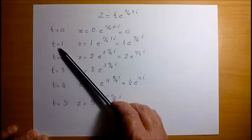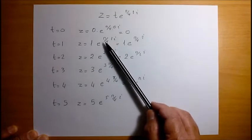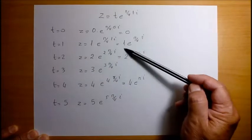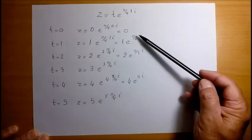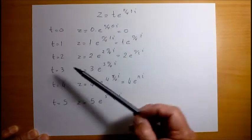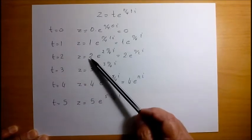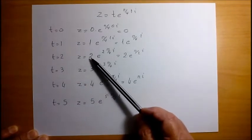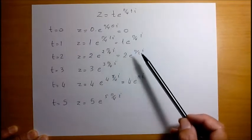For t equals 1, z equals 1 e to the pi by 4 times 1i. This is the modulus of the complex number and this is its angle or argument. For t equals 2, we have this result which comes from 2 times e to the 2 pi by 4 times i, which is 2 e to the pi by 2 times i. So this is our argument and this is its modulus.